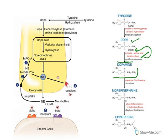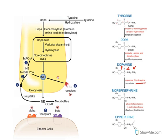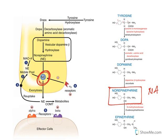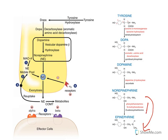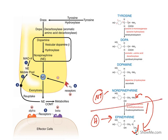After dopamine is formed, the enzyme dopamine beta-hydroxylase adds a hydroxyl group at the beta carbon position, converting dopamine to norepinephrine (also known as noradrenaline). This is what is synthesized and stored in vesicles in neurons. In the adrenal medulla, one additional step occurs: the enzyme phenylethanolamine N-methyltransferase transfers a methyl group to norepinephrine, converting it to epinephrine. So neurons synthesize only up to norepinephrine, while the adrenal medulla goes the extra step to produce epinephrine.